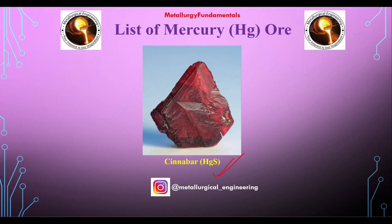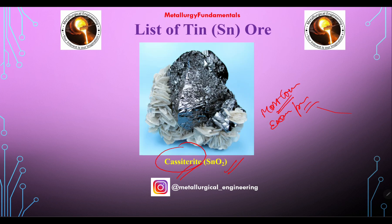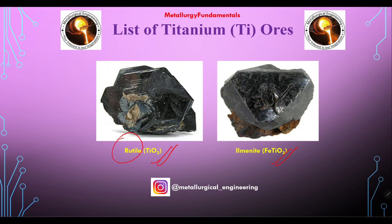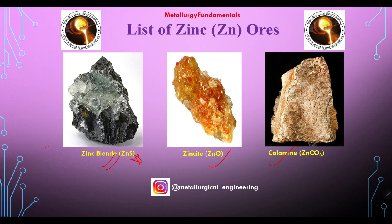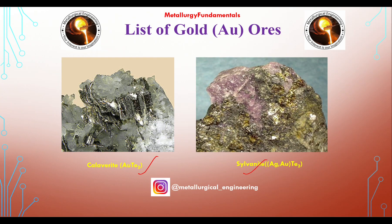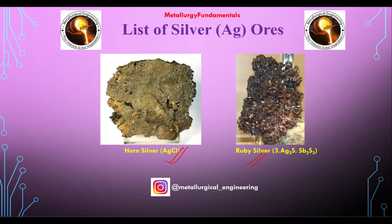To recap the most important ores: for mercury, cinnabar; for tin, cassiterite; for titanium, rutile and ilmenite — both very important; for lead, all three — galena, anglesite, and cerussite; for zinc, zinc blende and calamine; for gold, sylvanite and calaverite; for silver, both ruby silver and horn silver are important, with horn silver being the most important.